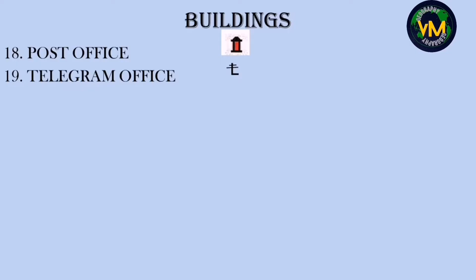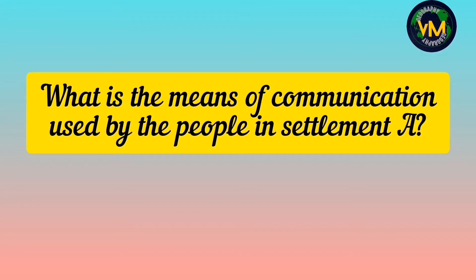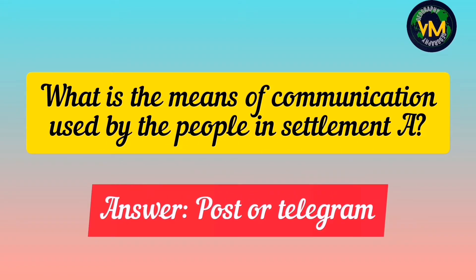Numbers eighteen and nineteen are means of communication: post office and telegram office. The most commonly seen symbol in topographical maps is post office. A question may ask what means of communication the people in a settlement use — if you see a post office or telegram office, that will be the answer.